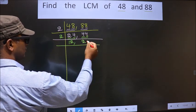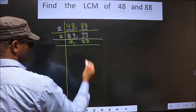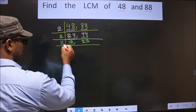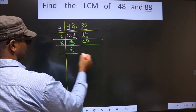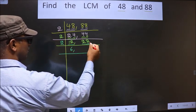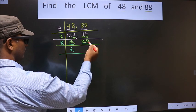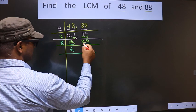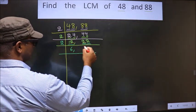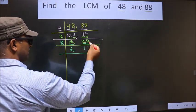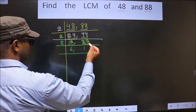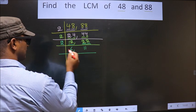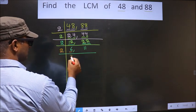We have 4 again, so we write 2 again. Now here we have 12 — 12 is nothing but 2, 6, 12. The other number has 2 in the last digit which is even, so this number is also divisible by 2. The first number is 2; 2×1=2. The next number is 2; 2×1=2. Now here we have 6 — 6 is nothing but 2×3=6.